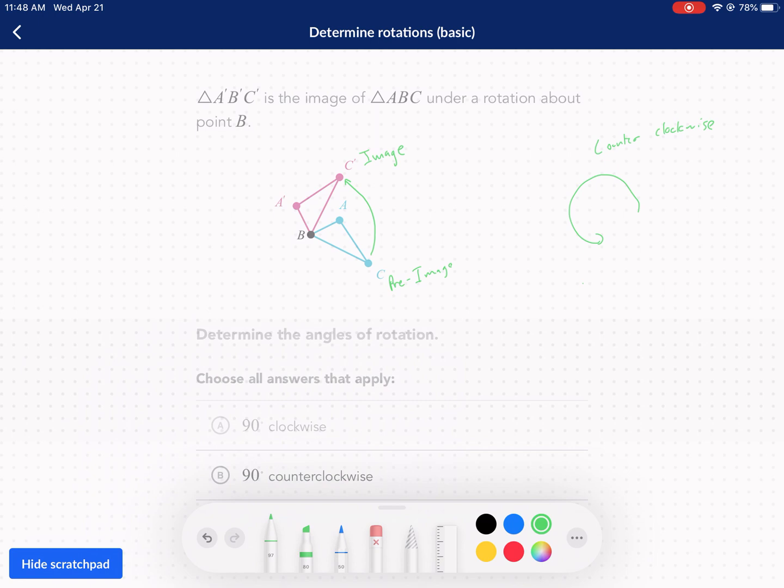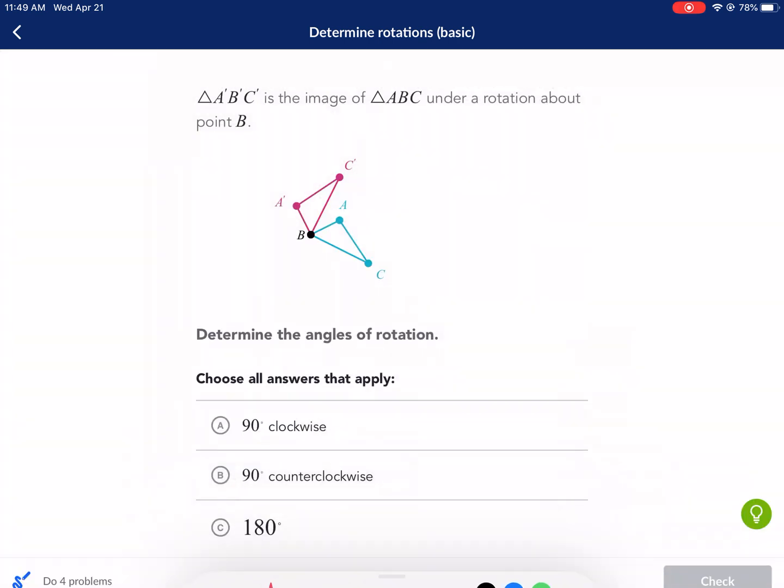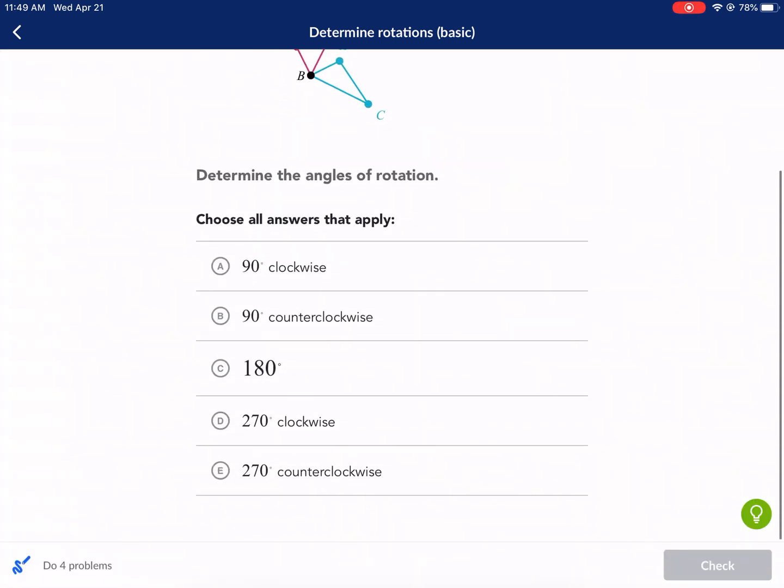Now, we can draw a line connecting C with B. It's already there. And then C with B here. And just measure that angle or estimate what that angle looks like. And clearly, this looks like a 90-degree angle. So it's not going to be the clockwise 90 degrees, but it is going to be the counterclockwise. It says all that apply, though.